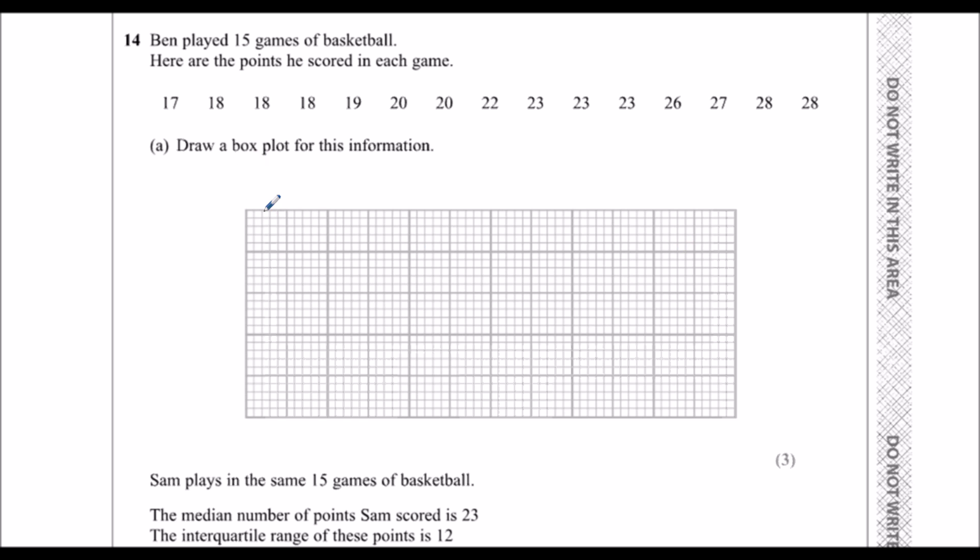What information goes on the box plot? We need to know the lowest number, the highest number. We're going to need to work out the median. So 1, 2, 3, 4, 5, 6, 7 off this side. 1, 2, 3, 4, 5, 6, 7 off this side. So 22 is the median.